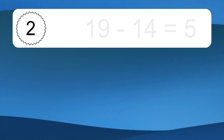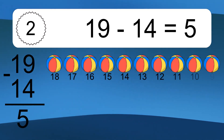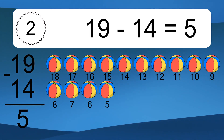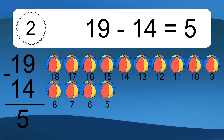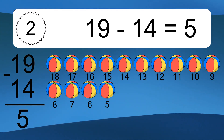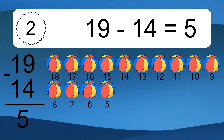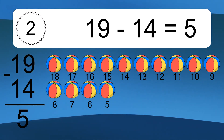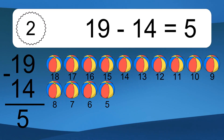19 minus 14 equals what? 19 minus 14 equals 5. Let's count it: 18, 17, 16, 15, 14, 13, 12, 11, 10, 9, 8, 7.